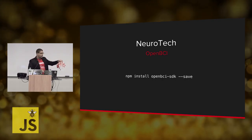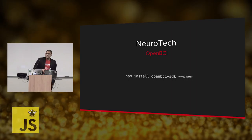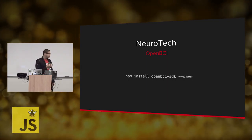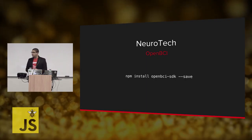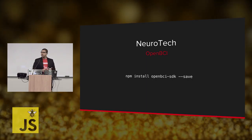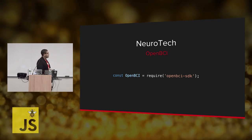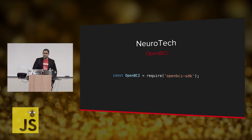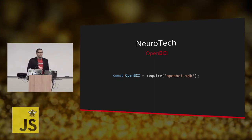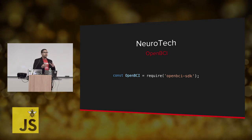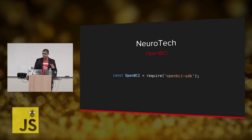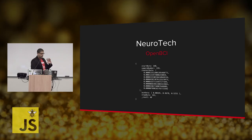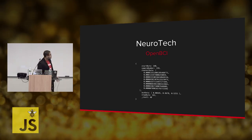Getting started with a brain-computer interface is pretty simple. A simple NPM install of the OpenBCI SDK can get you the dependencies you need to start getting data from this interface via Node. If we define an OpenBCI variable or constant, we can get access to this SDK that was actually built by a few people from a company called Push the World, who have partnered with the OpenBCI company to bring this technology to the JavaScript world. Ultimately, what we're going to be getting out of this is a data packet.